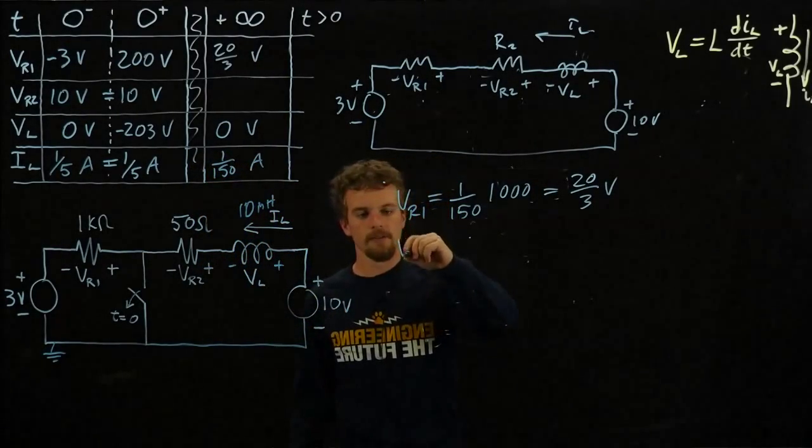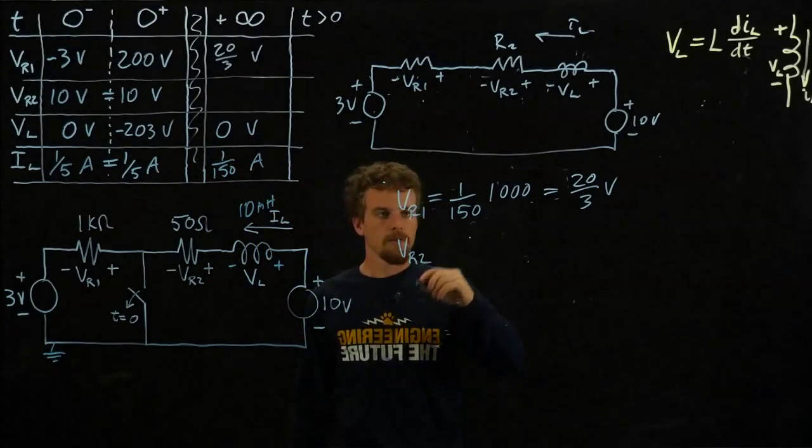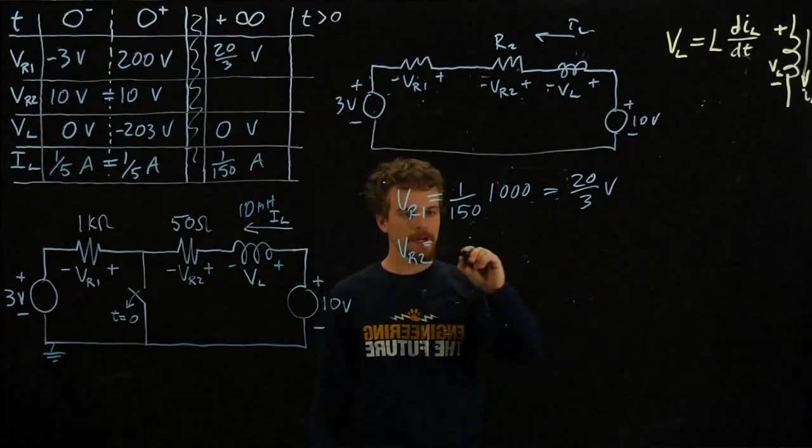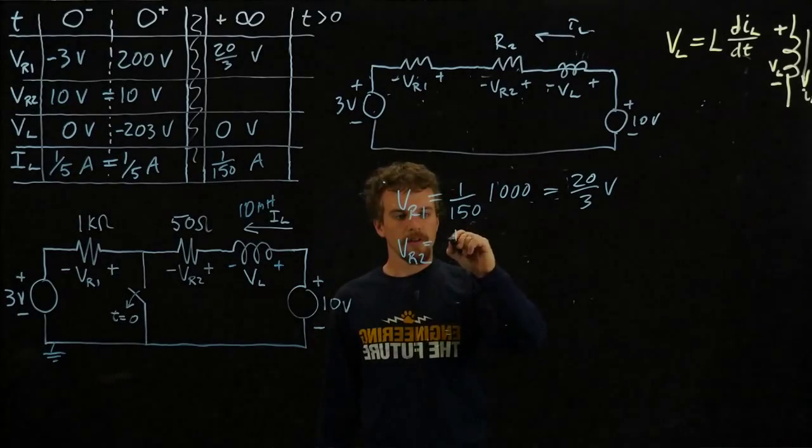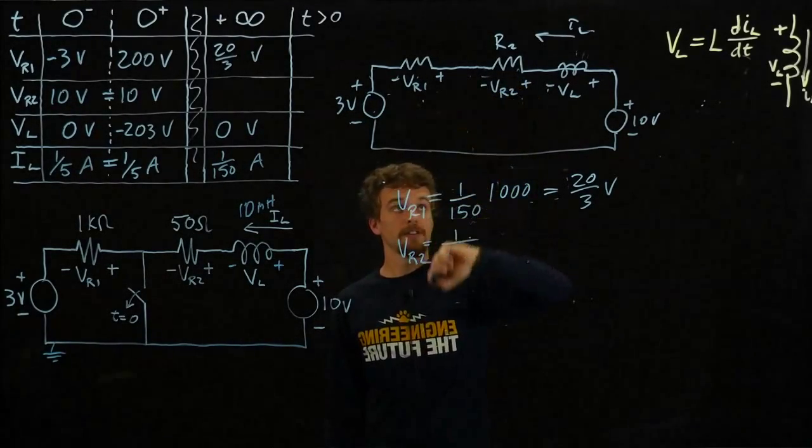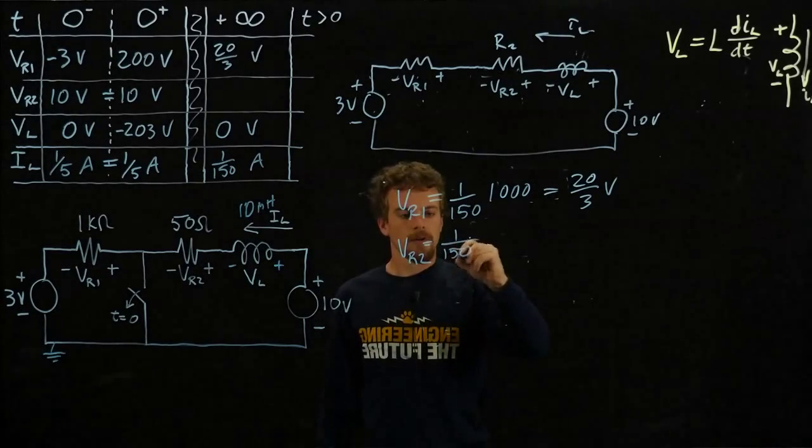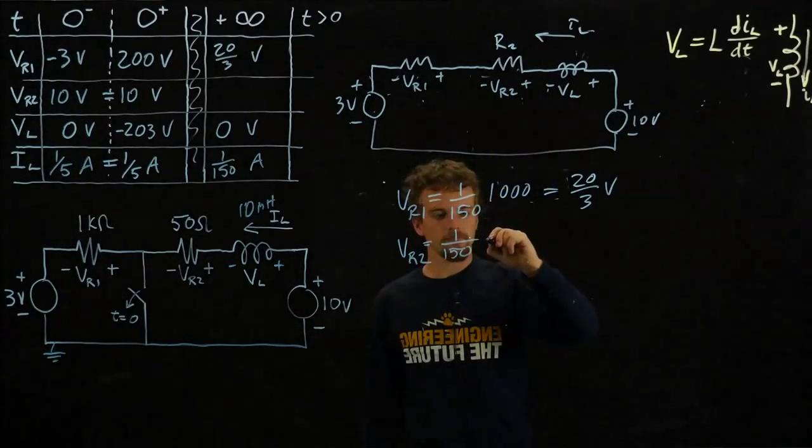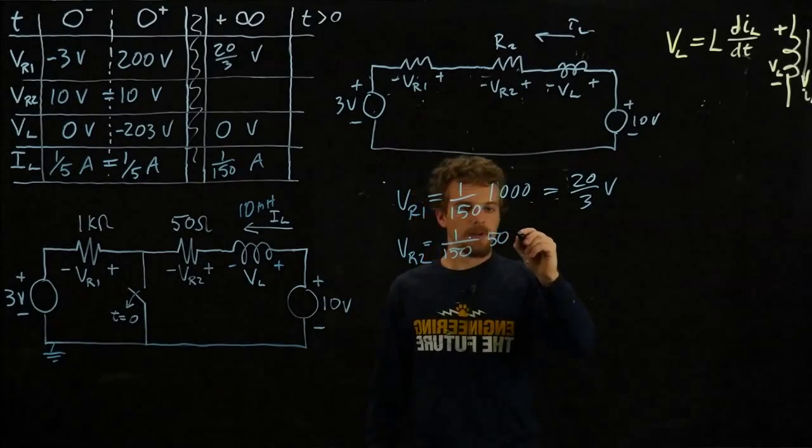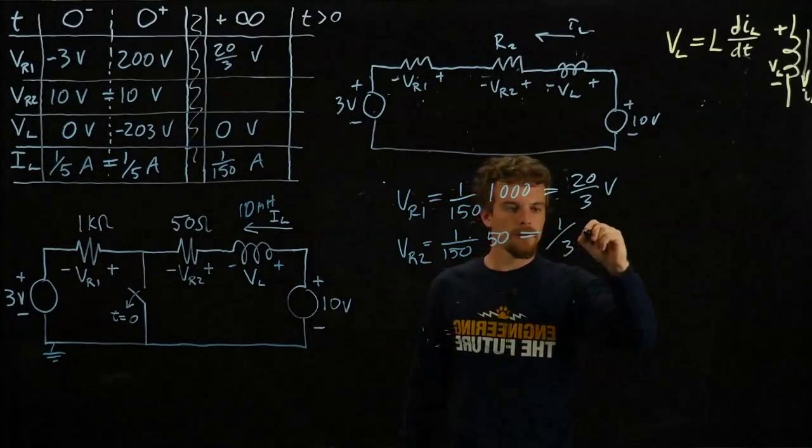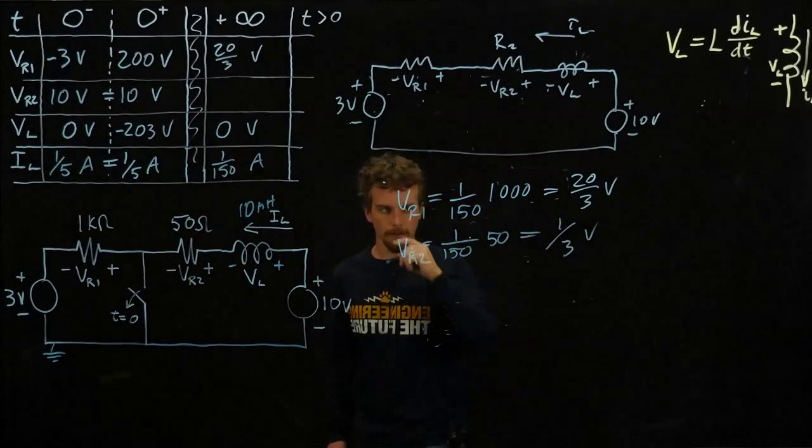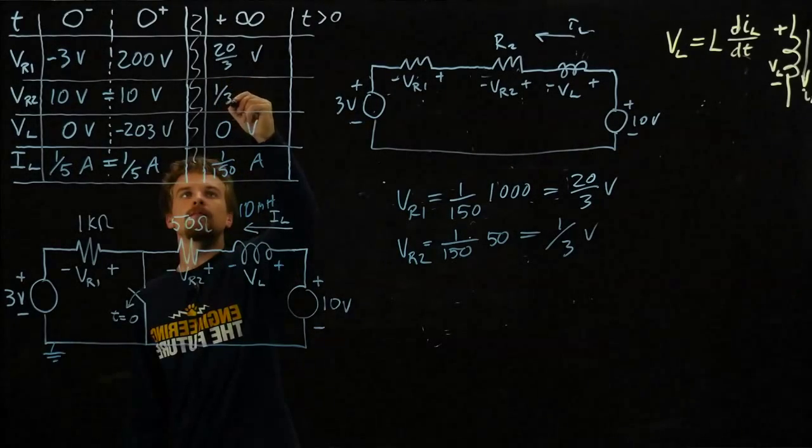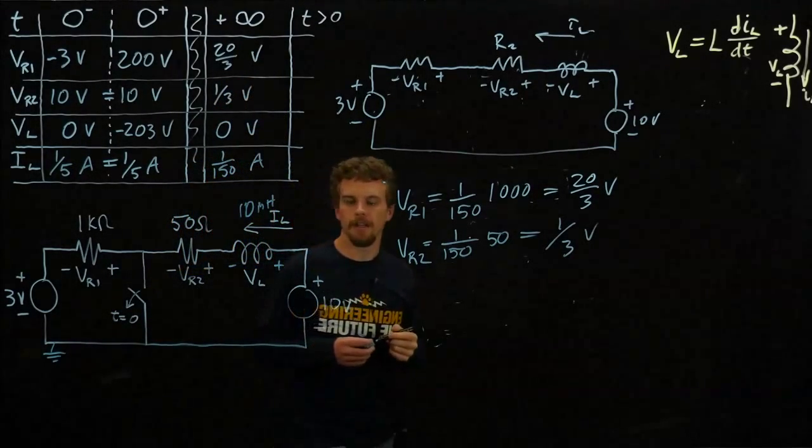And Vr2—remember, what I'm doing here is only valid for time positive infinity. The same current is flowing through Vr2 now. That's the current times the resistance value, which is 50 ohms, and that equals one over three volts. All right, so now we have our table filled in.